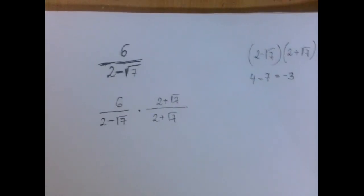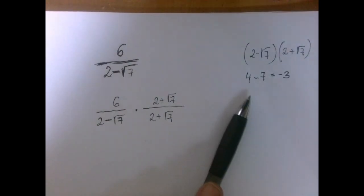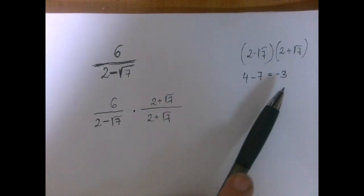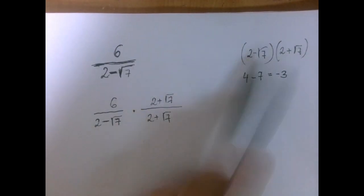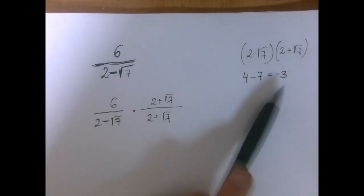One more thing, before we even proceed, I should have said this sooner. When we multiply 2 minus radical 7 by something obviously positive, we get a negative number.